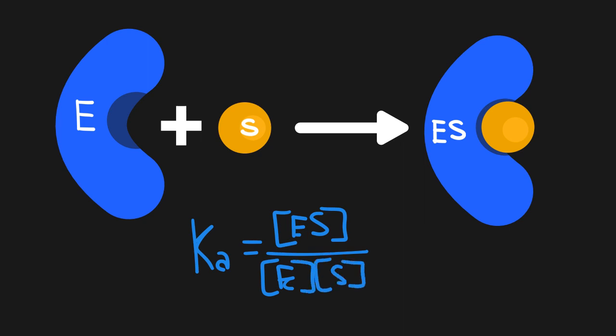Since it's describing association, as we have an increase in the Ka value, we should expect to see an increase in association. This is represented by the concentration of the enzyme-substrate complex, since that describes two things that have associated with one another. This means we should also expect to see a higher concentration of enzyme-substrate complex in comparison to the enzyme and substrate alone.